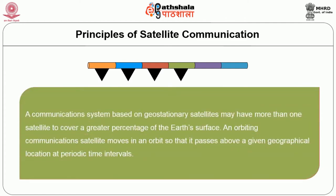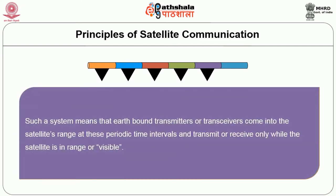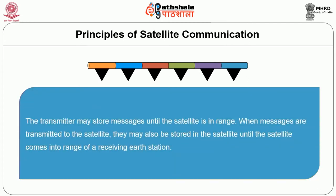A communication system based on geostationary satellites may have more than one satellite to cover a greater percentage of earth's surface. An orbiting communications satellite moves in an orbit so that it passes above a given geographical location at periodic time intervals. Such a system means that earth-bound transmitters or transreceivers come into the satellite's range at these periodic time intervals and transmit or receive only while the satellite is in range or visible. The transmitter may store messages until the satellite is in range.